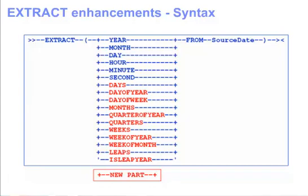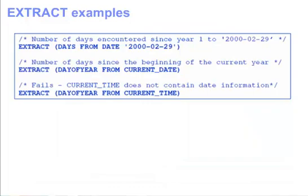In the previous release, you were required to code the functionality provided by these choices. Now that they are provided as part of the product, they simplify your date-time value calculations and increase productivity and performance. Here are some examples using the extract function using days and day of year. The Information Center provides additional information and examples.